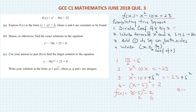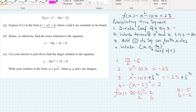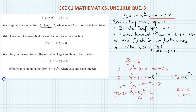Comparing with the form (x + a) squared plus b, a is equal to minus 5 and b is equal to minus 2. Part b: hence or otherwise find the exact solution of f(x) equals 0. So we have x squared minus 10x plus 23 equals 0.